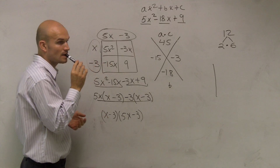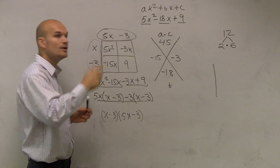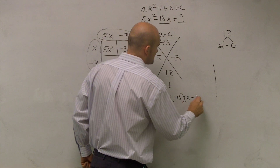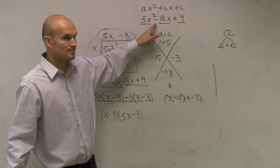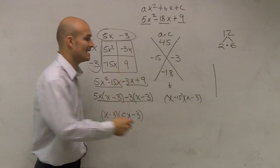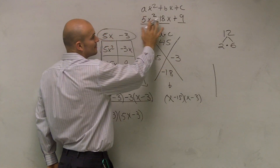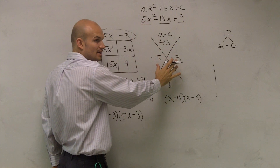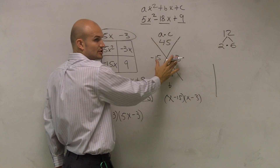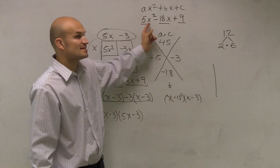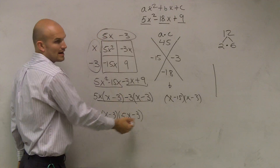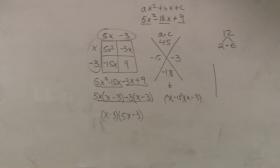A student asks: is the answer not going to be (x - 15) and (x - 3)? No, because x minus 15 times x minus 3 does not multiply out to give that original expression. If we didn't have an 'a' coefficient — if a equaled 1 — yes, those would be your two factors directly from the X method. But since we have an a of 5, we're multiplying by 5, so we have to use factoring by grouping or the box method to get our correct answer.